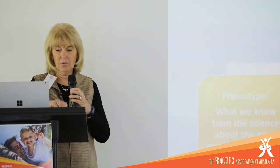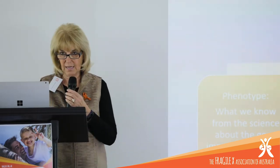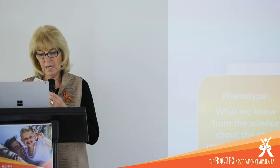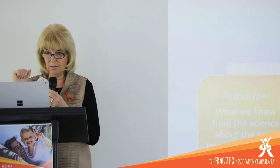What I'm going to try to do today is work through the neurobiological component so you can see what the research shows about which areas of the brain are affected by the lack of protein production. Then we can match up strategies and environmental conditions that support those neurobiological conditions. We have a phenotype, as Jonathan described — what we know from science about the gene and its impact on the brain.